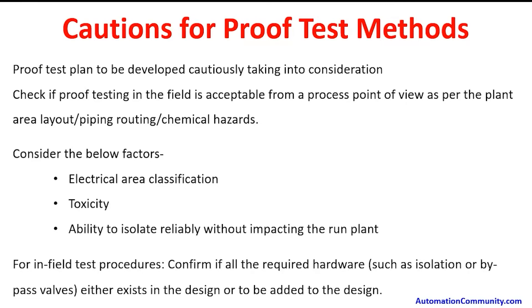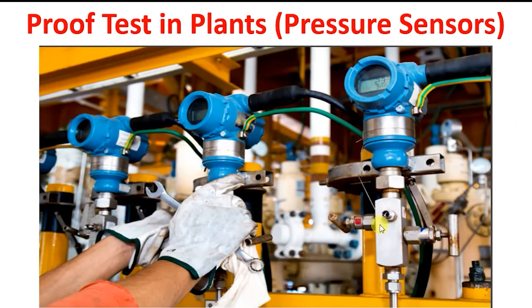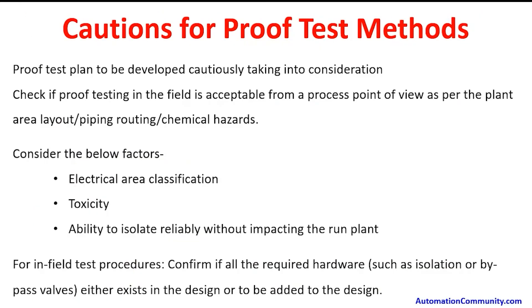Caution for proof test methods: proof test plans are to be developed cautiously, taking into consideration whether proof testing in the field is acceptable from a process point of view — as per the plant area layout, piping routing, chemical hazards, etc. Before taking a proof test, it must be ensured that flushing of the instrument line is safe, as the line may need to be drained, which could cause a small pressure change. This should not impact the running process.